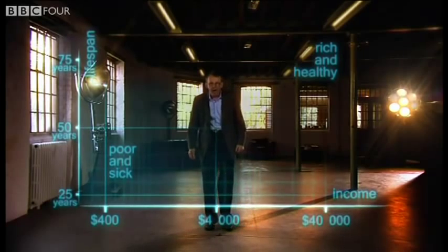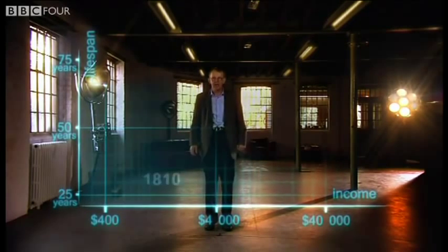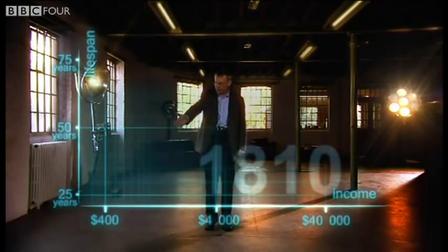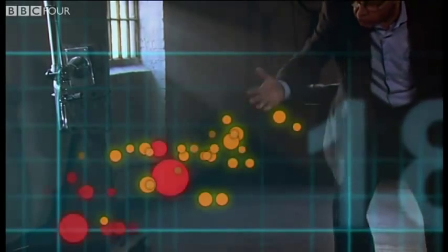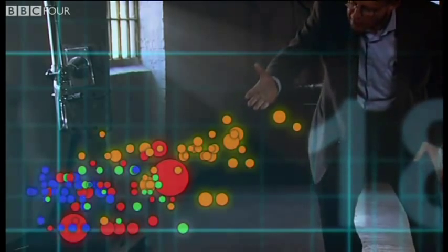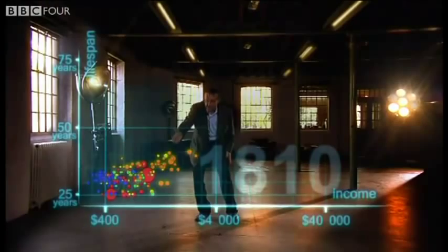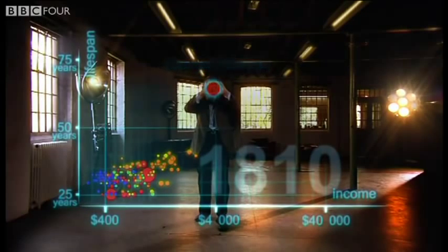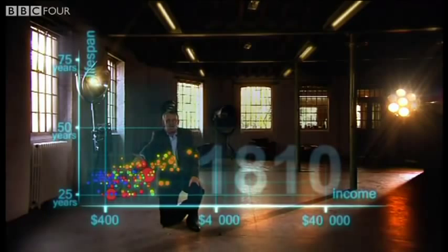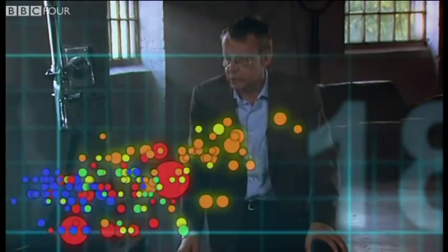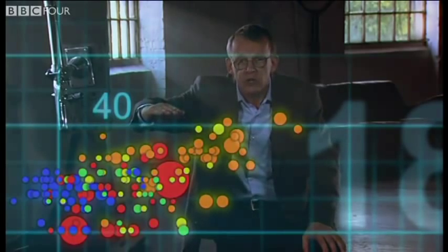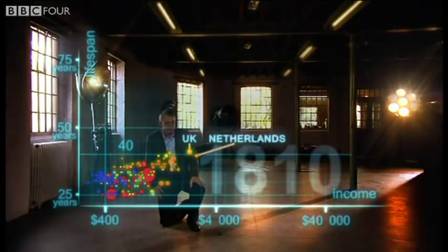Now I'm going to show you the world 200 years ago, in 1810. Here come all the countries — Europe brown, Asia red, Middle East green, Africa south of Sahara blue, and the Americas yellow. The size of the country bubble shows the size of the population. In 1810 it was pretty crowded down there — all countries were sick and poor. Life expectancy was below 40 in all countries, and only the UK and the Netherlands were slightly better off, but not much.